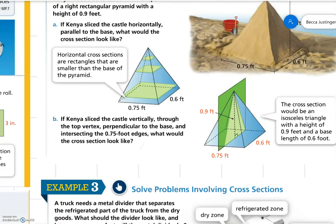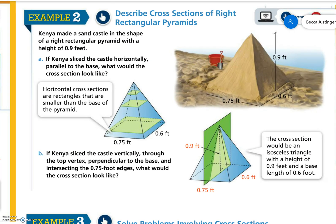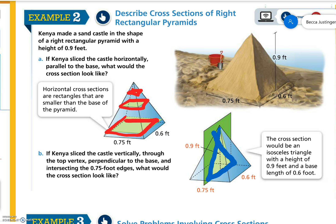Example number 2: Describe cross sections of a right rectangular pyramid. Kenya made a sandcastle in the shape of a right rectangular pyramid with a height of 0.9 feet. If Kenya sliced the castle horizontally parallel to the base, the cross section would be a square — but the squares are not the same size as we move up toward the top of the pyramid; they get smaller and smaller. If Kenya sliced the castle vertically through the top vertex, perpendicular to the base and intersecting the 0.75-foot edges, the cross section would be an isosceles triangle with a height of 0.9 feet and a base of 0.6 feet.